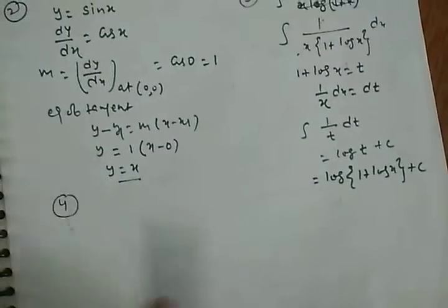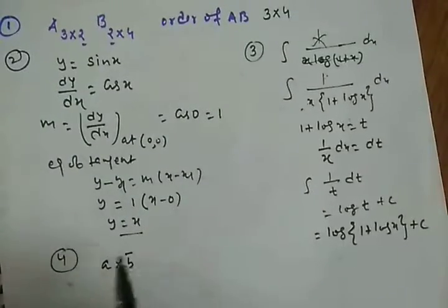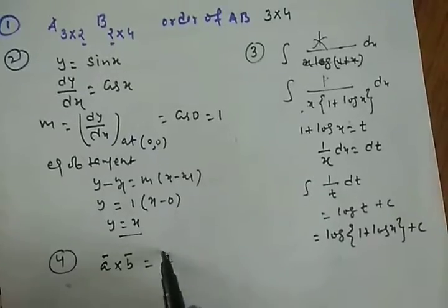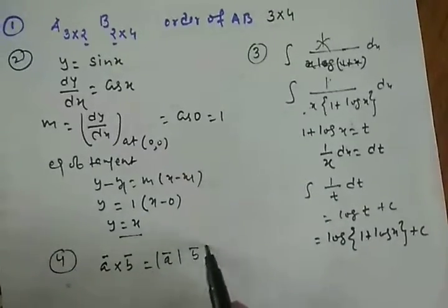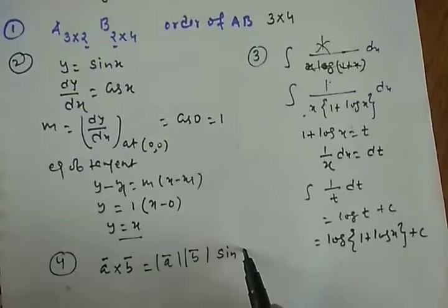Now our fourth question. We may find the angle between the vectors a cross b and b cross a. See, now a cross b is magnitude of a, magnitude of b, sine theta.